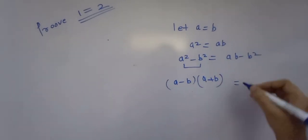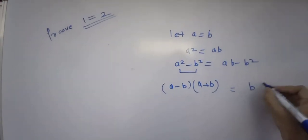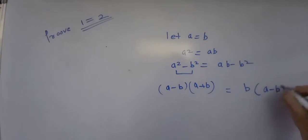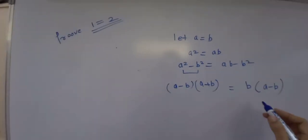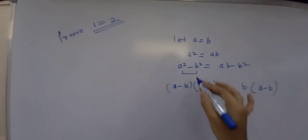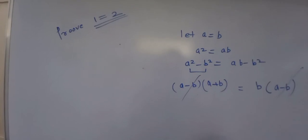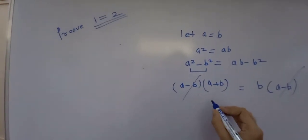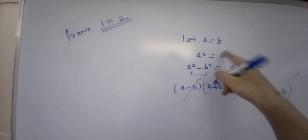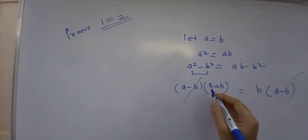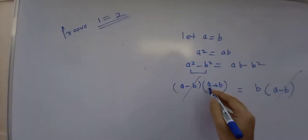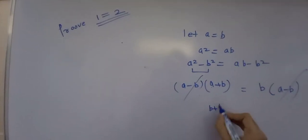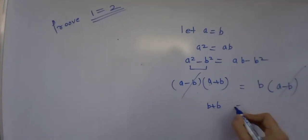So now here take b common on the right side. Now cancel (a minus b) from both sides. We know that a equals b, so substituting, we get b plus b equals b.